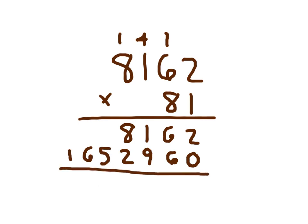Carefully add those numbers together. You'll notice several sums of 11 in different columns. Place your comma, and the answer is 661,122.